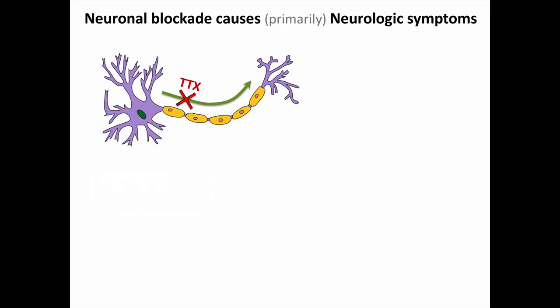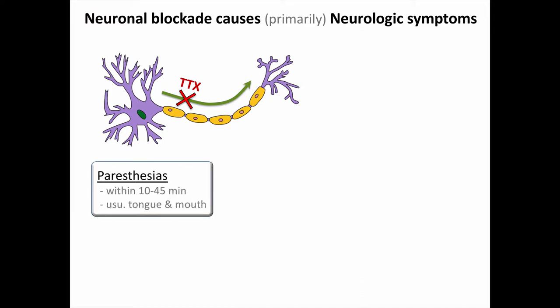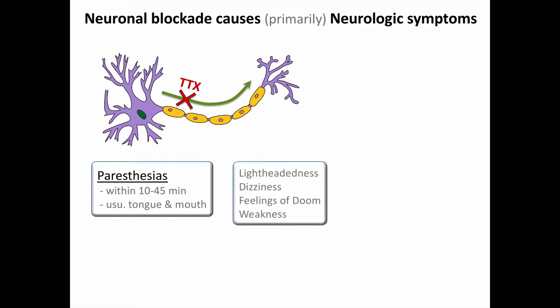Unsurprisingly, this neuronal blockade will cause primarily neurologic symptoms. Paresthesias occur within several minutes, usually of the tongue and lining of the mouth. Indeed, some mild neurotoxicity might even be the desired effect, to let the consumer know that it's working, but not severe enough to be dangerous. Other neurologic symptoms with higher doses include lightheadedness, dizziness, weakness, and a sense of impending doom. There may also be nausea, vomiting, sialorrhea or drooling, and diaphoresis or sweating.